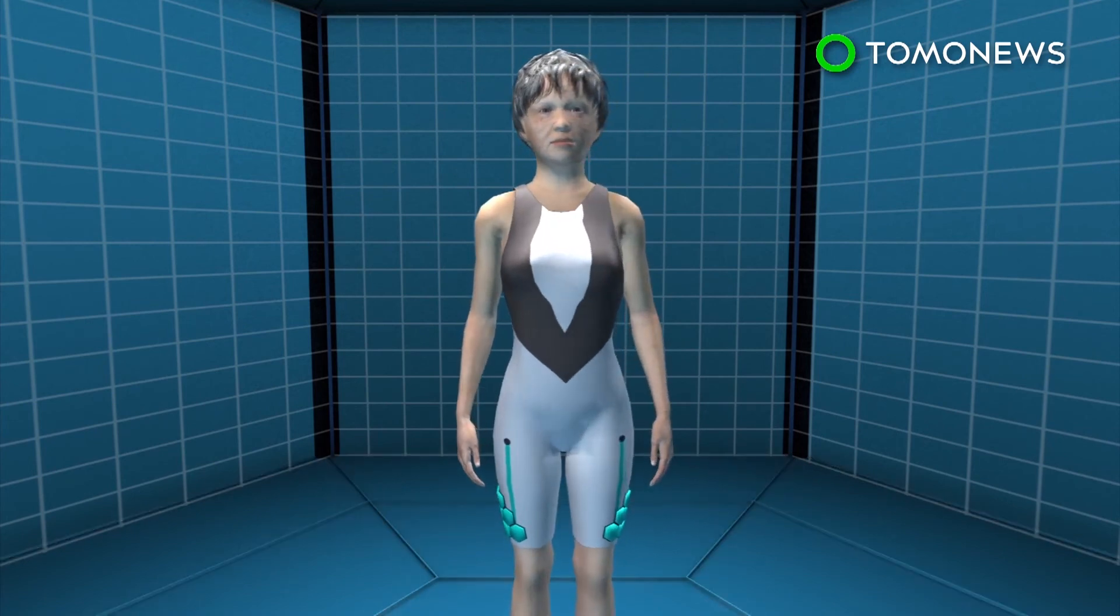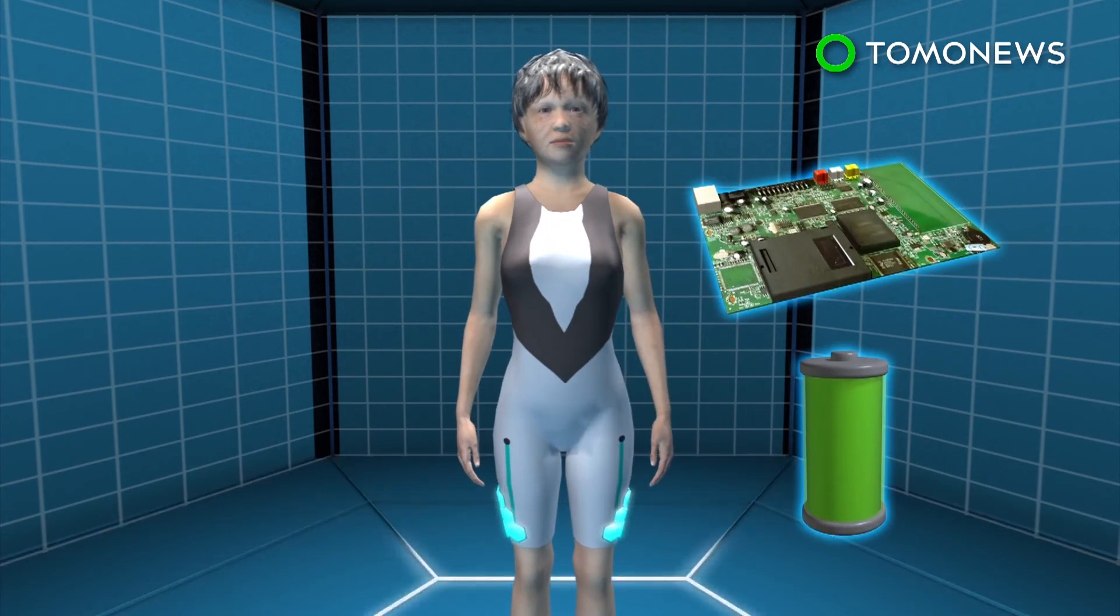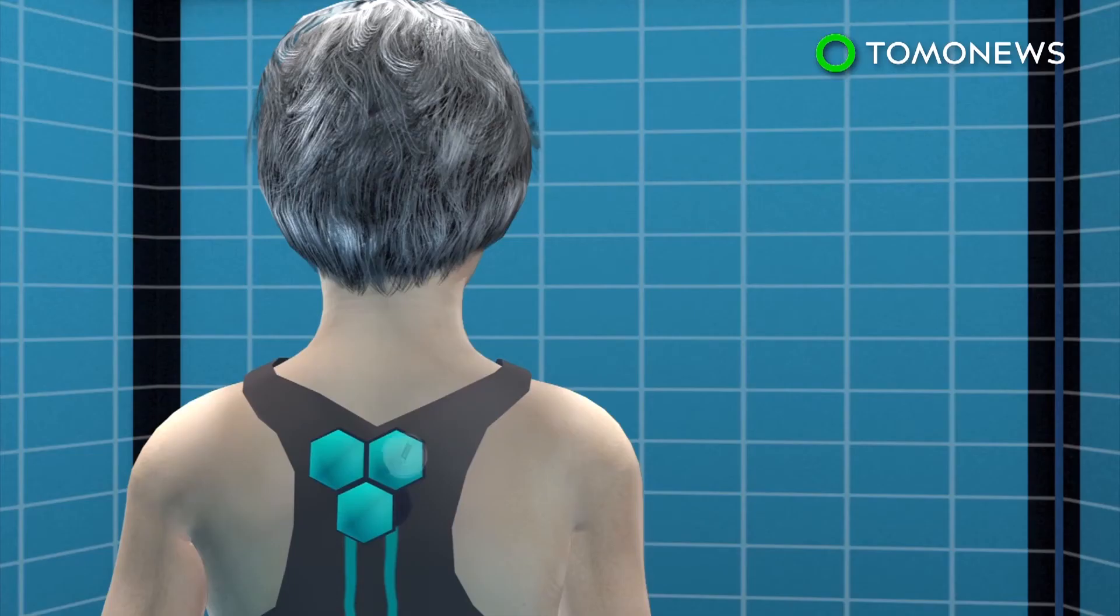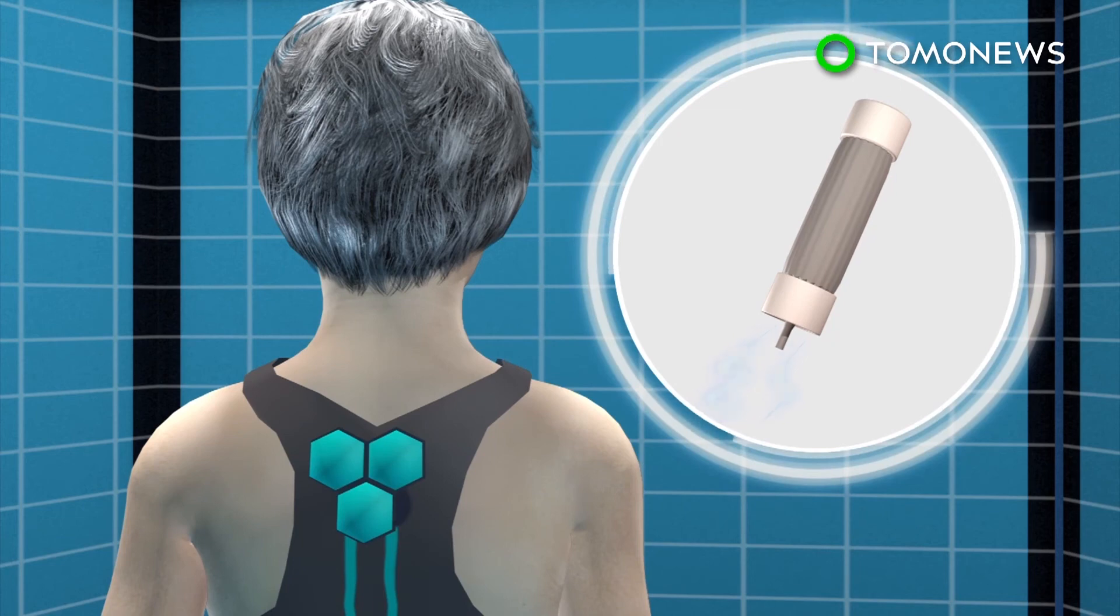The hexagonal pods placed around muscle groups contain batteries, control boards, and elastic muscle technology. The technology contains a smart material that behaves like human muscle, which expands when exposed to an electric current, and contracts when the current is removed.